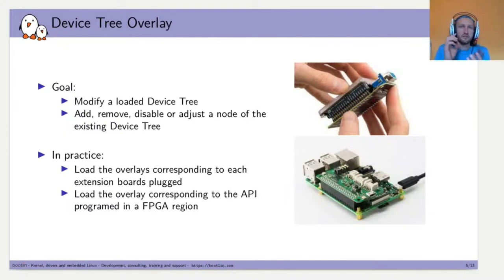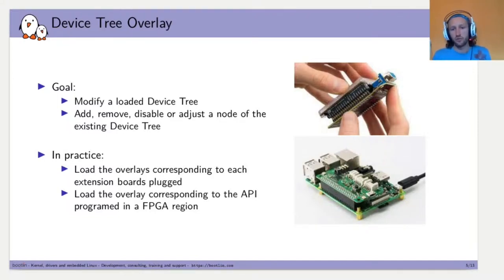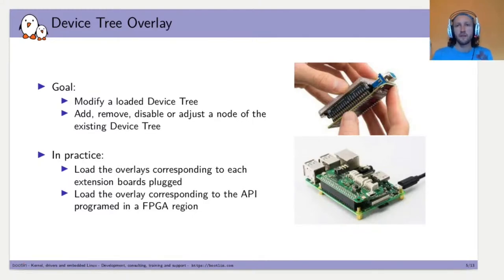Each extension board has a corresponding overlay DeviceTree. When you plug a board in, you load the right overlay — you don't need to write one whole DeviceTree for each combination of main board plus extension board. A second use case where DeviceTree overlay is interesting is when using FPGAs: you can describe in the overlay which IP cores are programmed into the FPGA region, with one overlay per FPGA configuration.